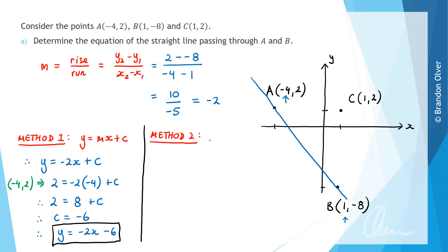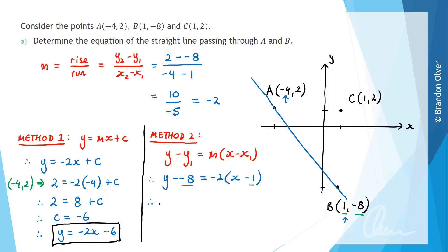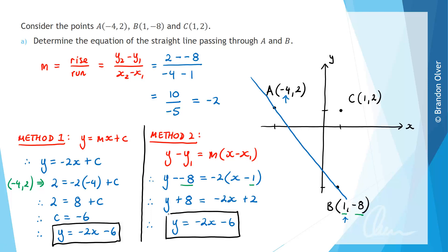Method 2 uses the equation y minus y1 equals m times x minus x1. We substitute the gradient negative 2 and the point B (1, negative 8): y subtract negative 8 equals negative 2 times x minus 1. So y plus 8 equals negative 2x plus 2. Subtracting 8 from both sides gives y equals negative 2x minus 6, which is the same equation as before. Either method finds the equation of the straight line through A and B.